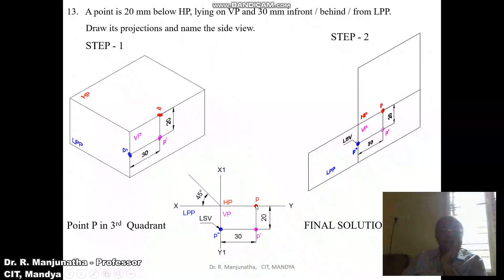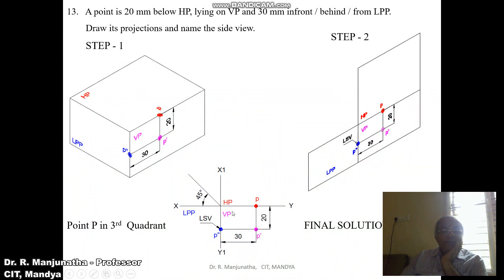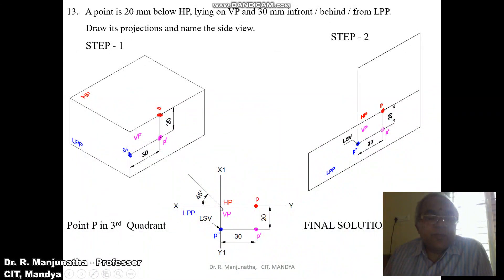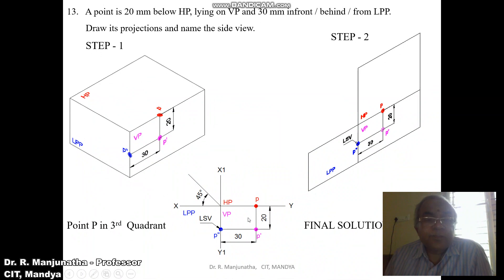Since the point is lying on VP, it should be on HP — that is point p on the XY line. When you look from the left side view, you can see the distances of the front view and also the top view. Draw a horizontal projector from p-dash to the profile plane, then from the origin measure an angle of 45 degrees with a protractor and draw an inclined thin line. Draw a horizontal projector from p to the XY line, then from that point draw a vertical projector — these intersect to give point p-double-dash. Since we are looking from the left side view — because the point is behind VP, behind LPP — this is the left side view.